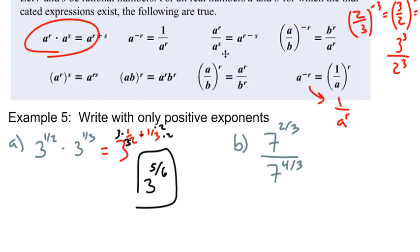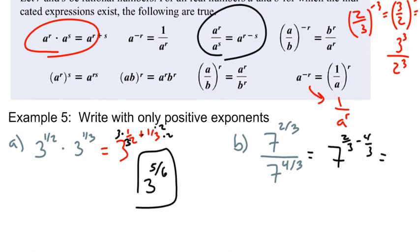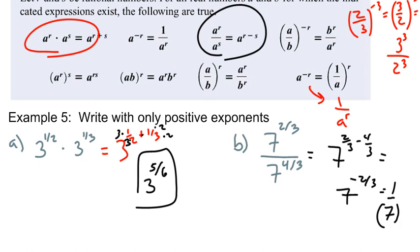Now this is just applying the division rule. Seven and seven both have the same base, so we keep our base. What do we do with two thirds and four thirds? We're just going to subtract: two thirds minus four thirds gives us negative two thirds — two minus four is negative two. Now we have to apply the rule for when you have a negative exponent: we take the reciprocal of seven, so it's going to be one over seven raised to the power of two thirds, but now it's a positive exponent. We're not going to rewrite that as a radical because the directions say to leave them as positive exponents.